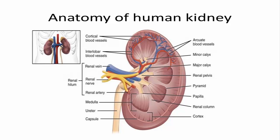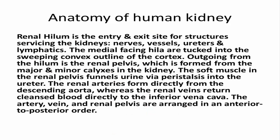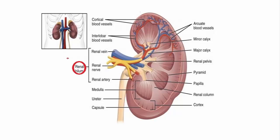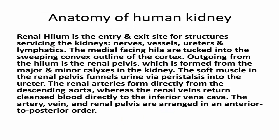Now let's see the different parts of the kidney and their function. The renal hilum is the entry and exit site for structures servicing the kidneys: nerves, vessels, ureters and lymphatics. The medial-facing hilum are tucked into the sweeping convex outline of the cortex.